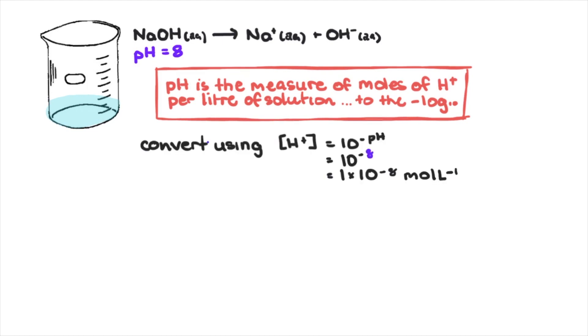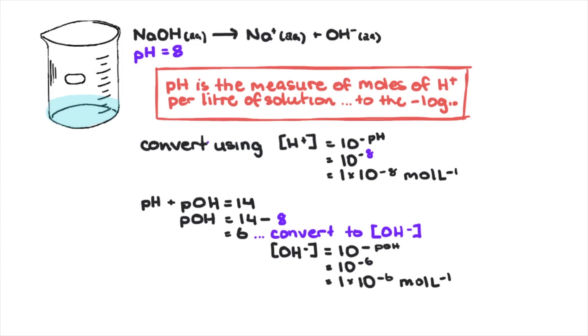A super small concentration. And since the sum of pH and pOH is 14, pOH must equal 6. This can be converted to the hydroxide ion concentration, giving us 1 times 10 to the negative 6. So for every liter of water of our strong base, we have 1 times 10 to the negative 6 ions of hydroxide.